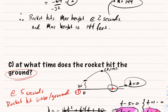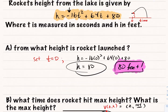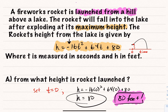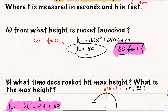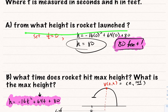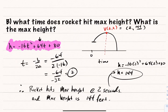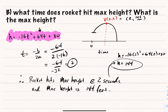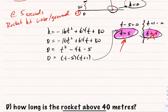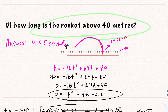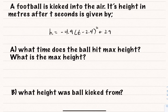Review this problem carefully — it covers a lot of ground that is commonly tested. We have a motion object with a downward-opening quadratic, and these are the standard questions you'll always encounter: what height did it start at, when did it hit max height and what is that max height, when does it hit the ground, and how long is it above or below a certain distance.